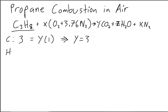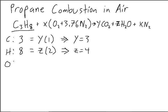Next, we're going to look at the hydrogen term, and we can see that we have 8 hydrogen from propane, and that's equal to Z times 2, because there are 2 hydrogens in water vapor, and so from this we know Z is equal to 4. Next we're going to look at oxygen.